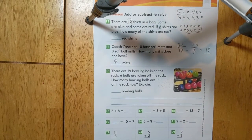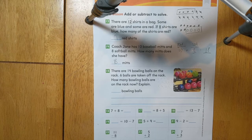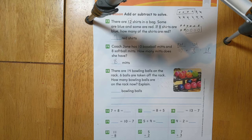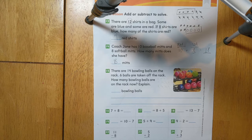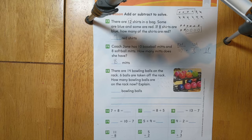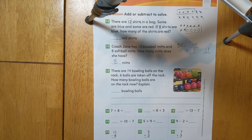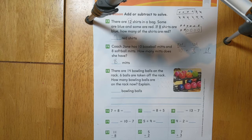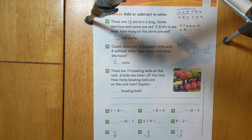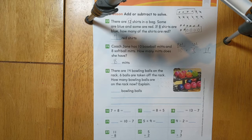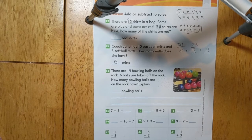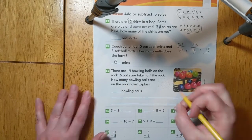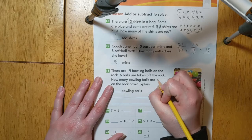Let's take a look at number 15. There are 14 bowling balls on the rack. Six balls are taken off the rack. How many bowling balls are on the rack now? Explain. There are two different ways that we can solve this problem. Just like number 13, we can add or subtract to find our answer. This time let's start with addition. We know that six balls are taken off the rack. So I will draw six ones.